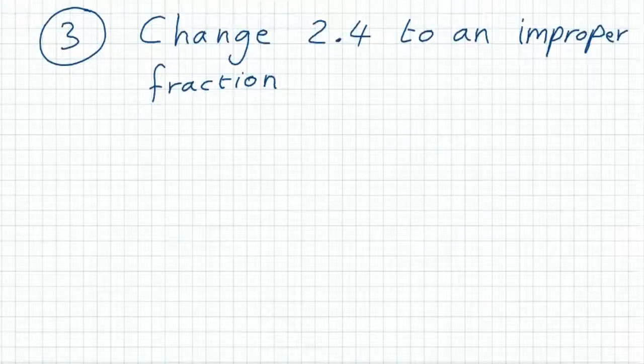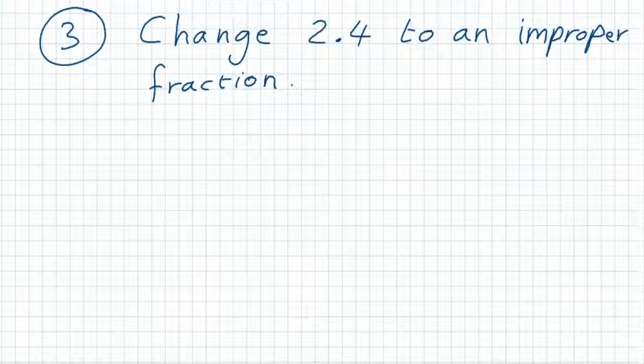Example 3: change 2.4 to an improper fraction. To do this without a calculator, we can write it as 24 over 10.